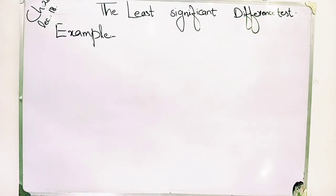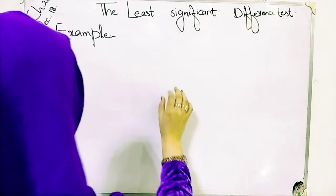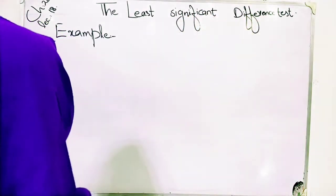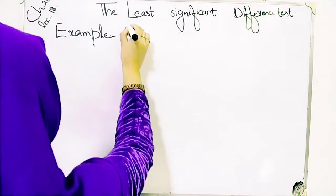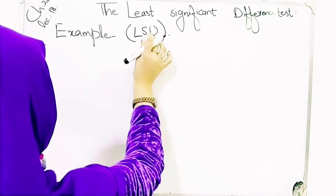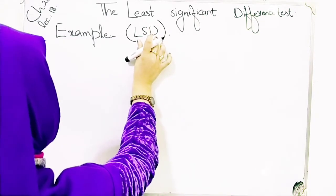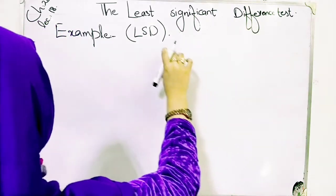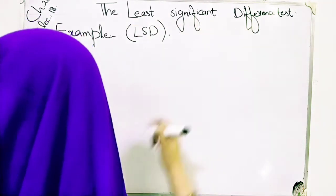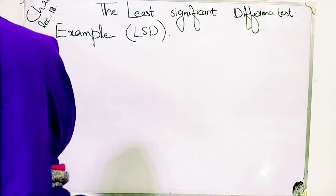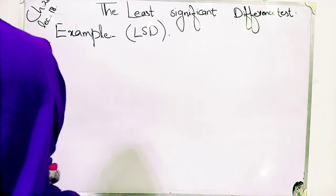I have shown you an example where you have to use the LSD test. When they say LSD test, it means the least significant difference test. So which test do you have to use? The least significant difference test — this will be given in the question. The calculation is your two-way ANOVA, which you have done using the simple method. It is the same; there is no difficulty.